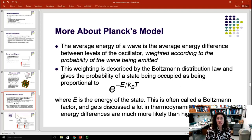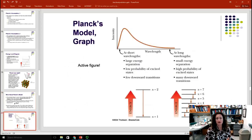So, if you take into account the weighting, and also take into account Planck's model for the discretized energy level jumps, then you end up with this curve, Planck's model. At short wavelengths, there's a large energy separation, a low probability of excited states, and few downward transitions. And at long wavelengths, there's a small energy separation, a high probability of excited states, and many downward transitions.